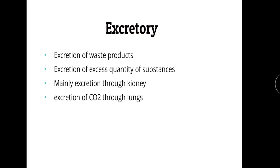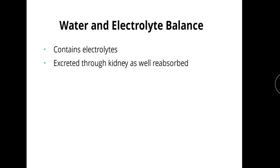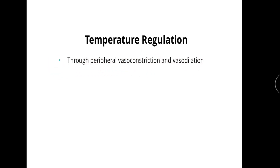Regarding excretory functions, blood excretes waste products such as urea — anything in excess in the body is excreted in the urine — and carbon dioxide is excreted through the lungs. Blood also contains electrolytes, and maintaining these is very important. For example, excess calcium can cause cardiac arrest during systole. Electrolytes in the blood are regulated mainly through the kidneys by excreting and reabsorbing the requisite amounts.